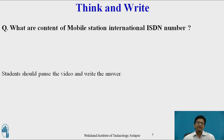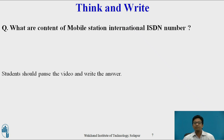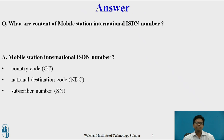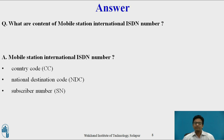Think and write: what are the contents of the Mobile Station International ISDN Number? The contents are: Country Code (CC), National Destination Code (NDC), and Subscriber Number.